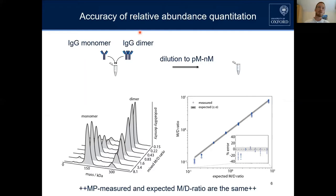We were able to SEC-purify in the polishing step, and with the help of mass photometry, we picked the purest IgG monomer fractions and the purest IgG dimer fractions. This gave us two pure stock solutions of monomer and dimer, which we could mix at different ratios.